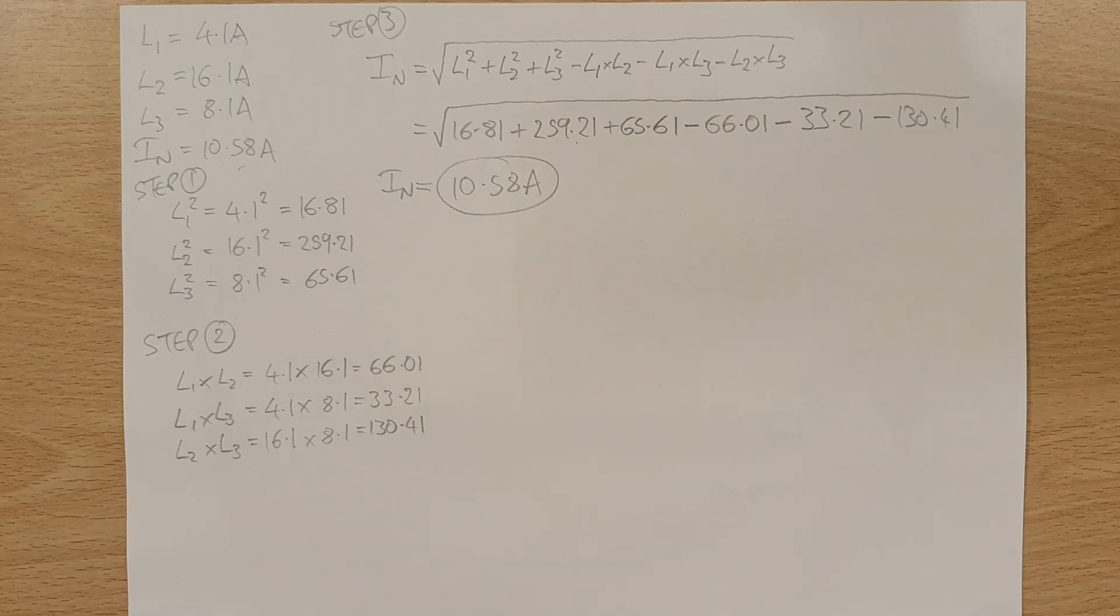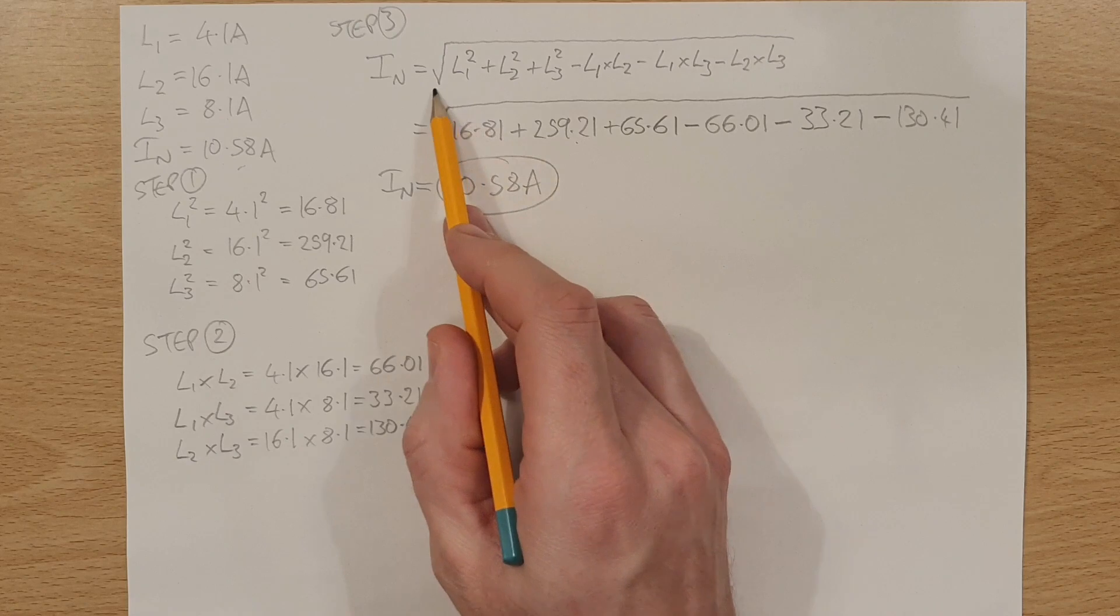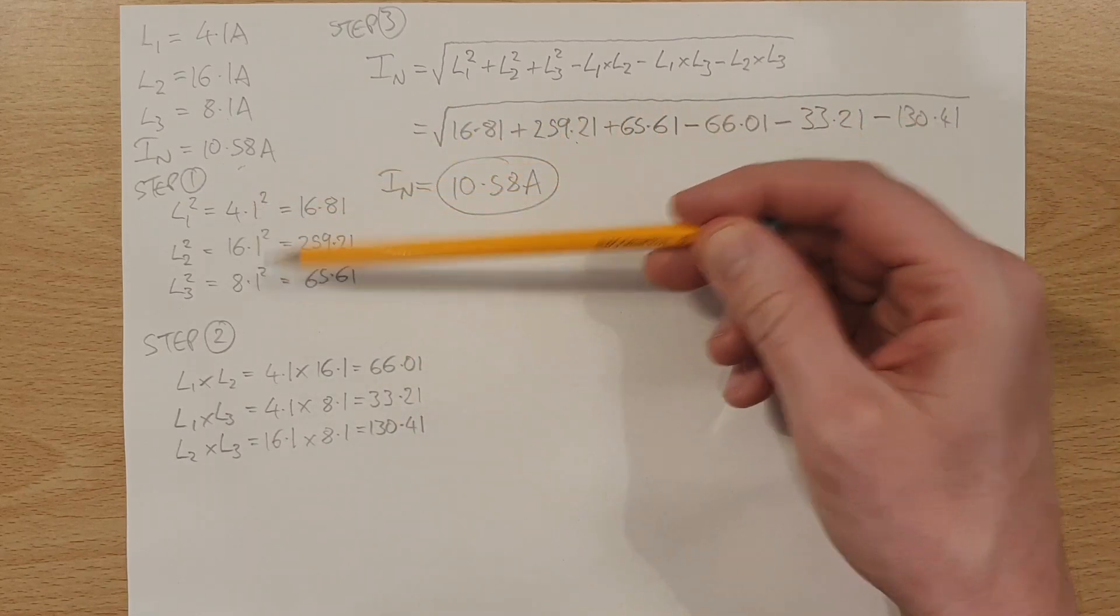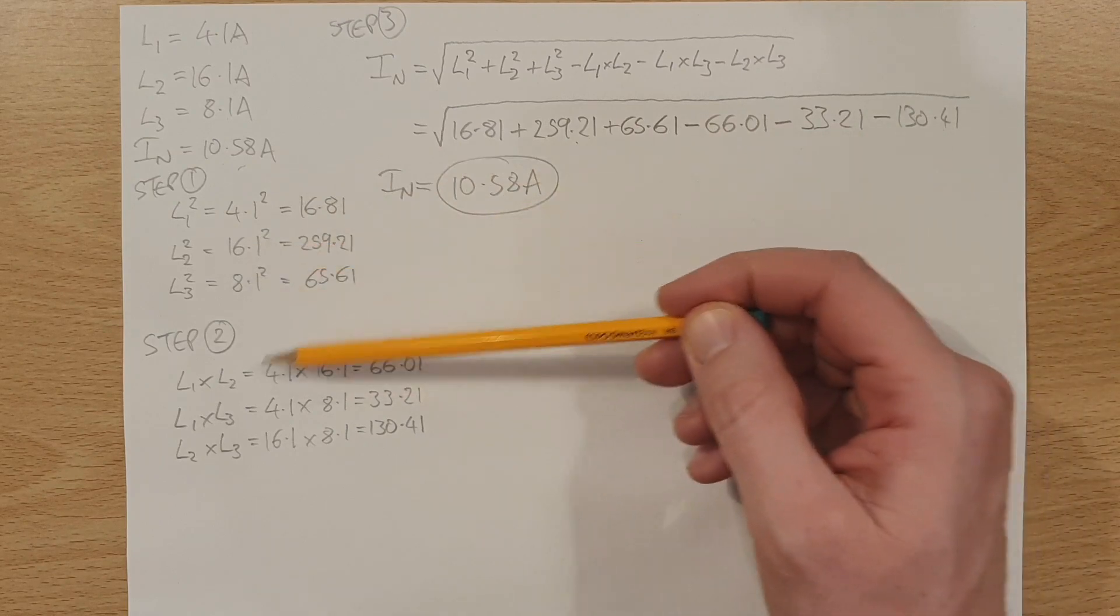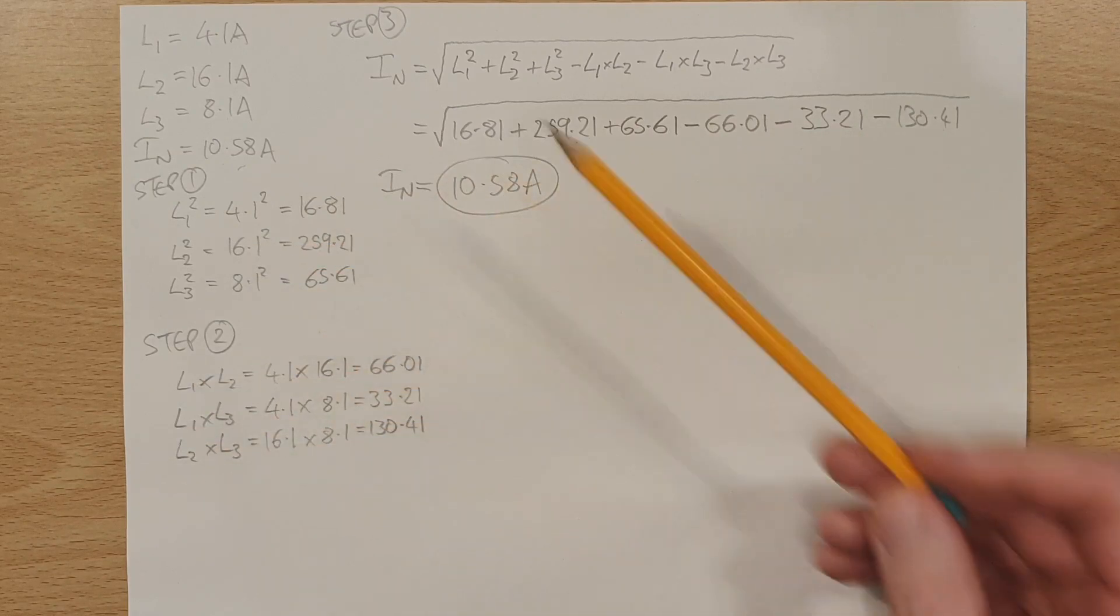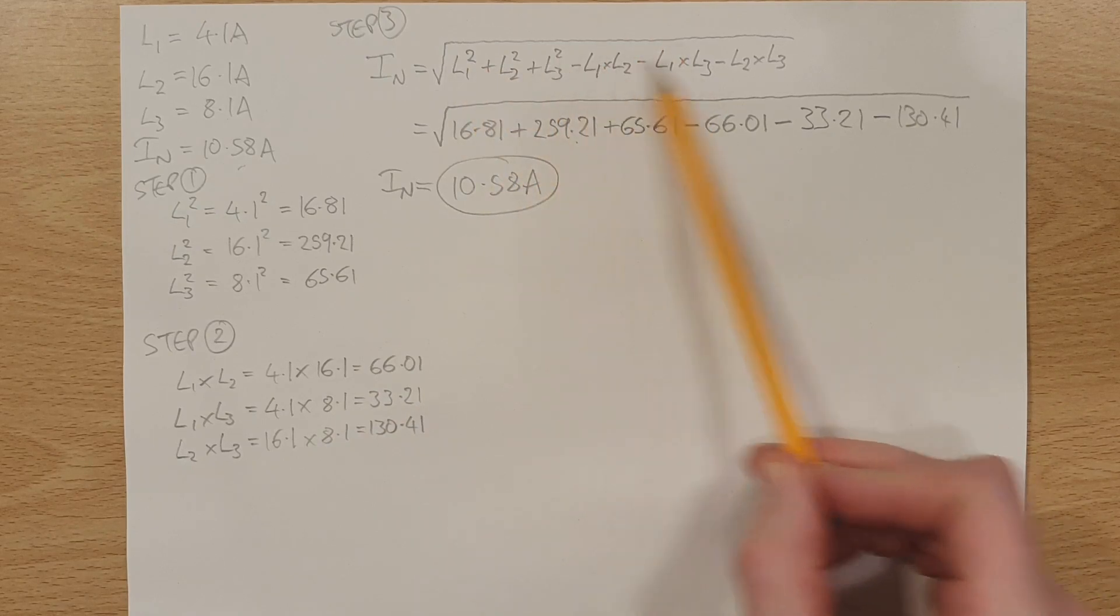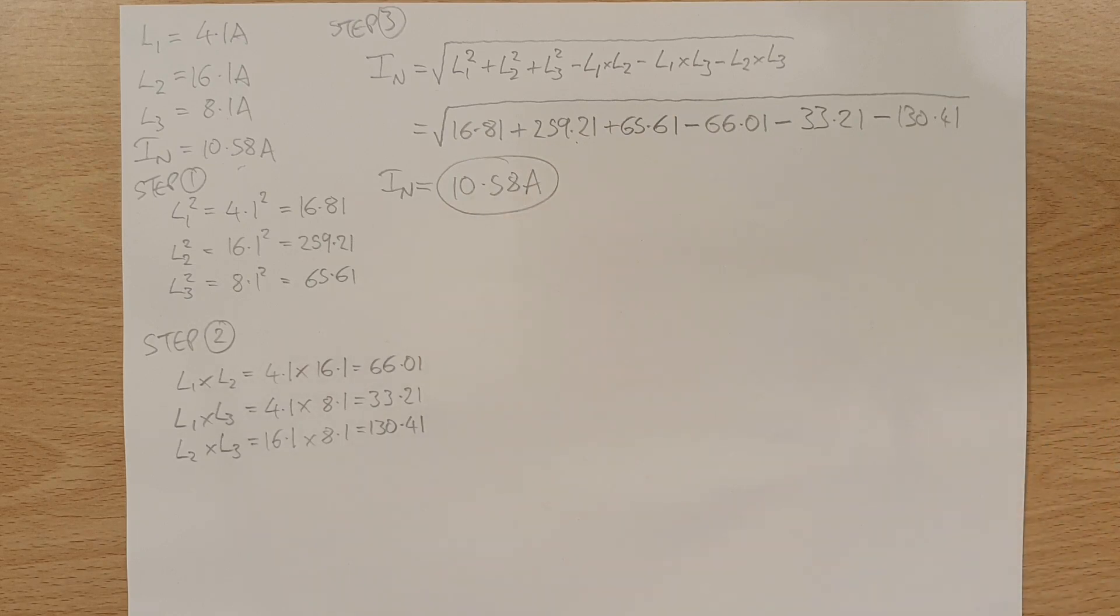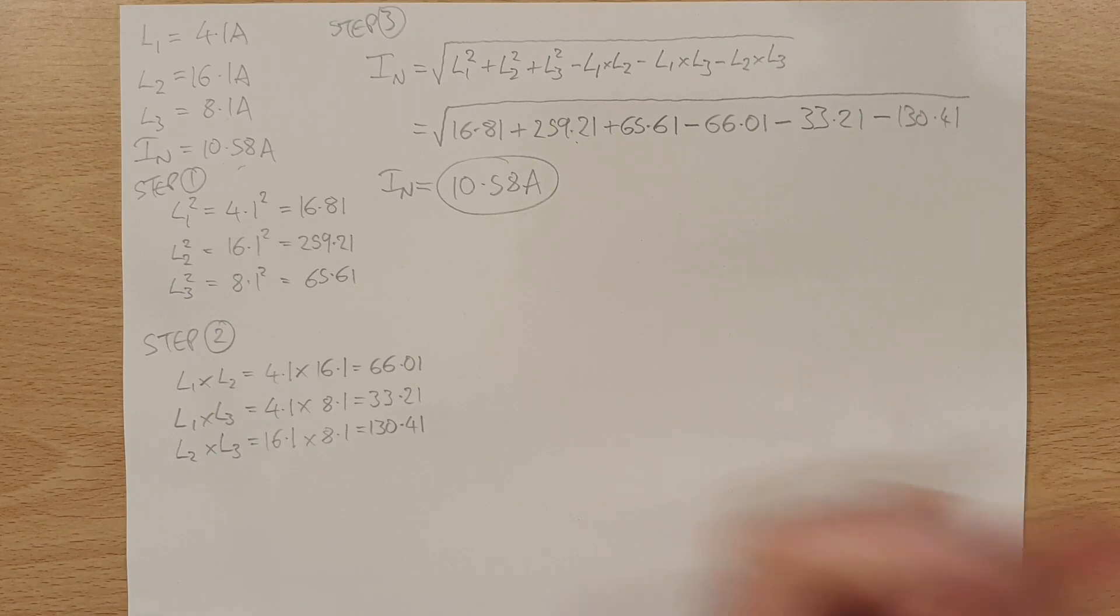So again, quite a good method. I don't think it's overly complicated. The first time you see this formula, it looks a little bit intimidating, but if you break it into stages, square the currents, and then in step two, multiply each current by each other current, and then we add the squares together, and then we take away all of the multiplied numbers and square root the whole thing, we end up with the neutral current. A slightly easier method, I think, and an accurate method, absolutely. So if this is your preferred method, then feel free to use it following the cautions that were mentioned earlier on in this video. So at this point, all that's left to say is thank you very much for watching.